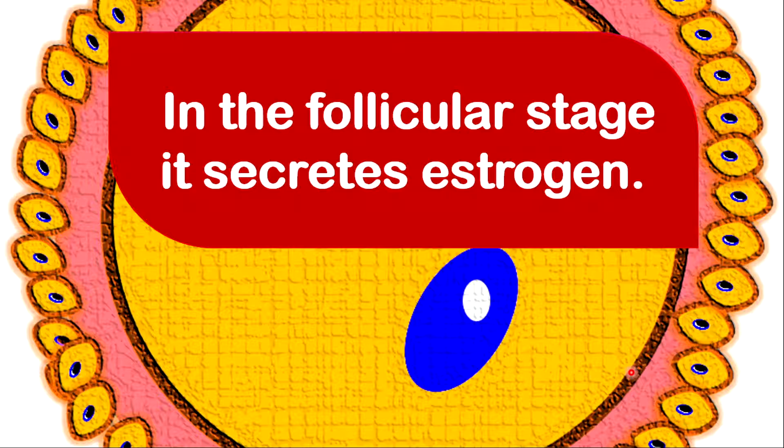In the follicular stage, which means the immature stage of the egg, they will secrete estrogen. Estrogen is responsible to bring about secondary sexual characteristics in females. These characteristics will include the development of mammary glands, otherwise called the breast. It will also stimulate the growth of pubic hair and the widening of hips.